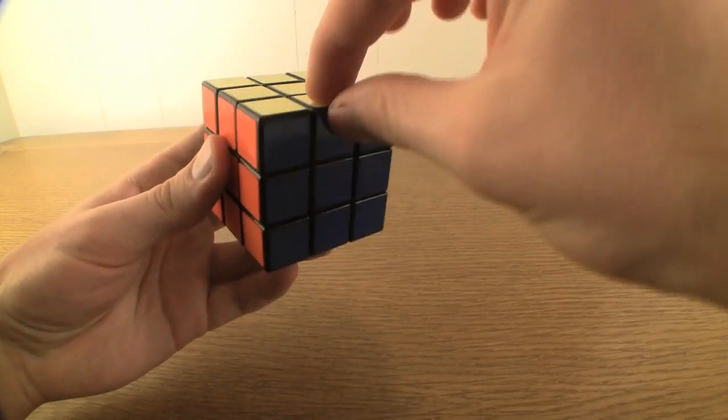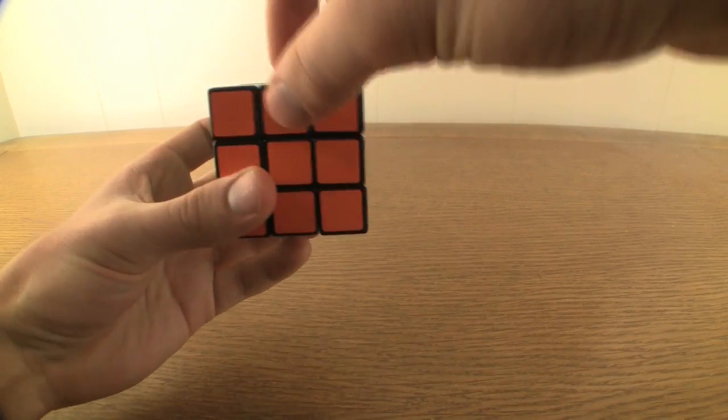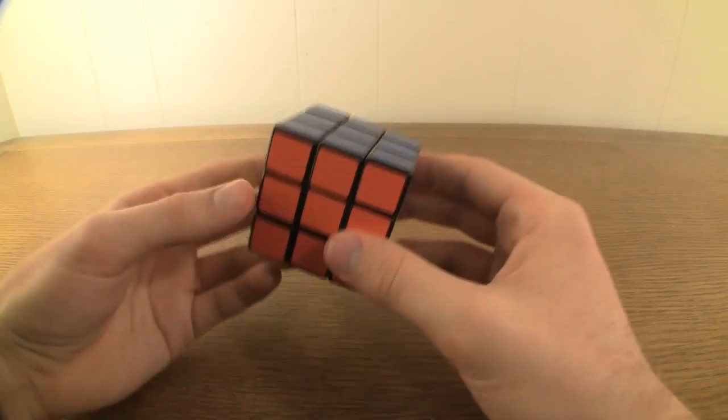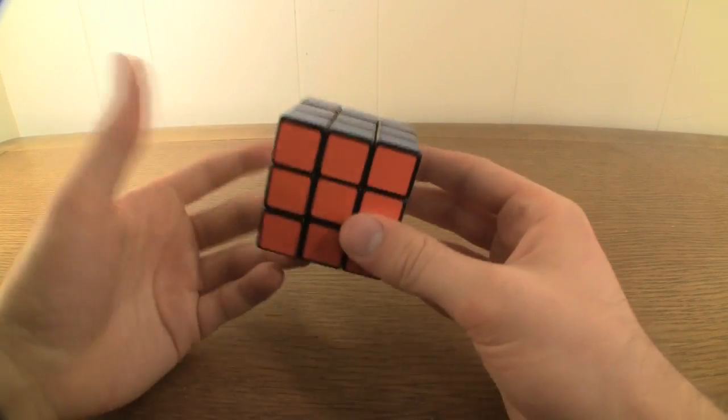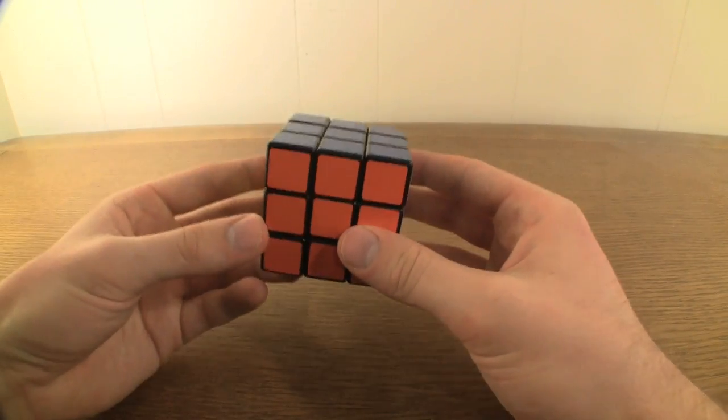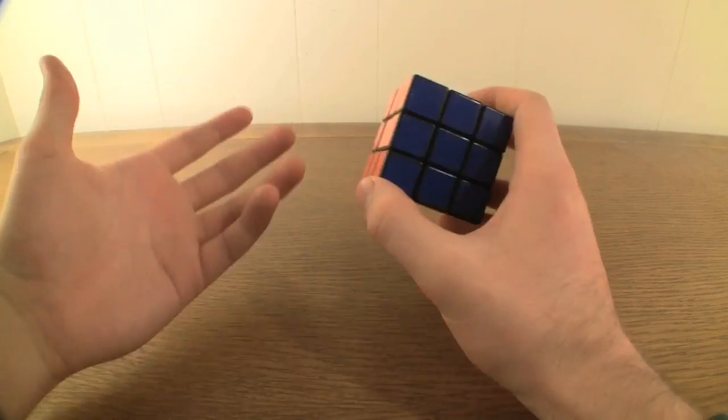Finally, there are 12 edge cubelets, every cubelet that's not a corner or a center. Each edge piece has two colors and can move to occupy any of the 12 different edge locations.